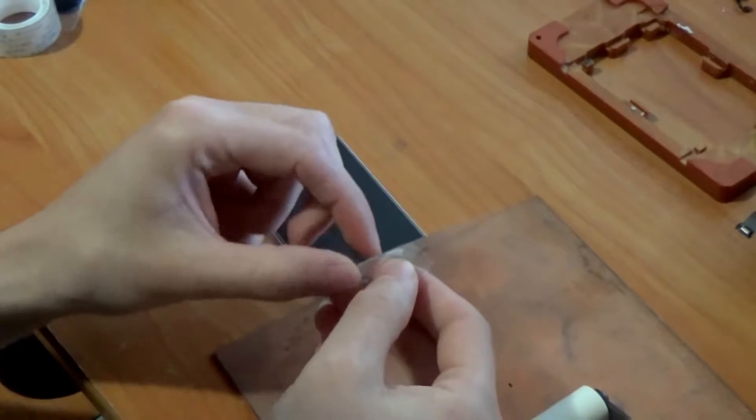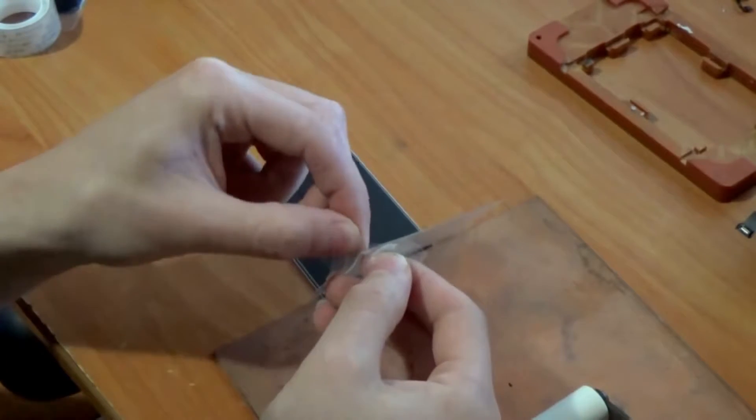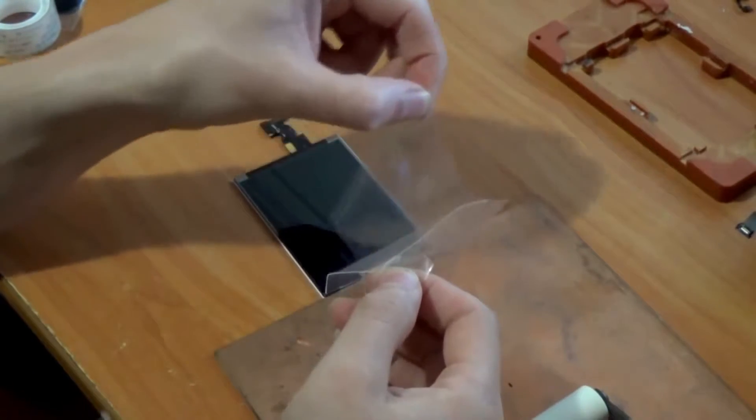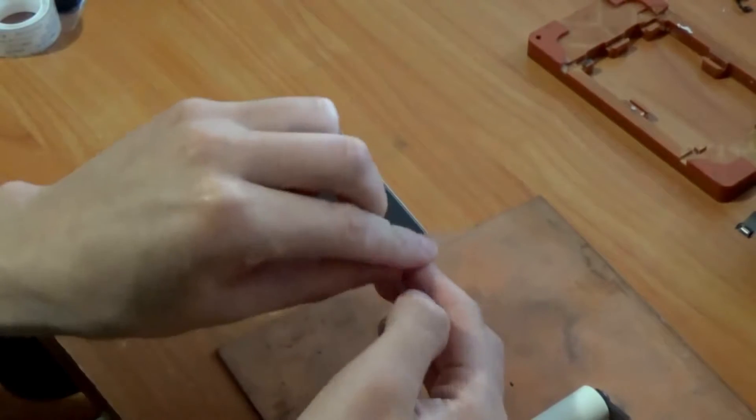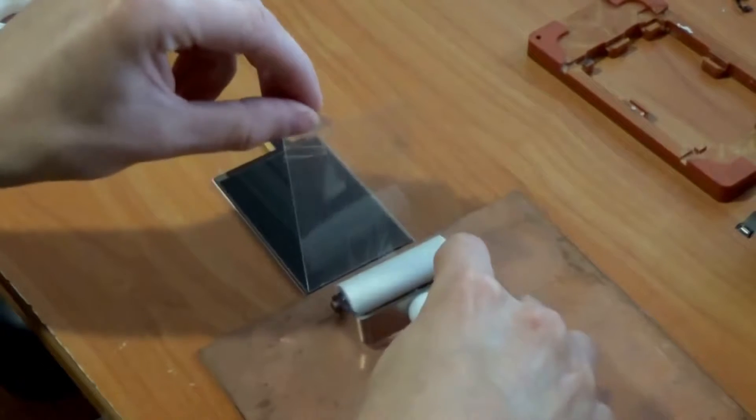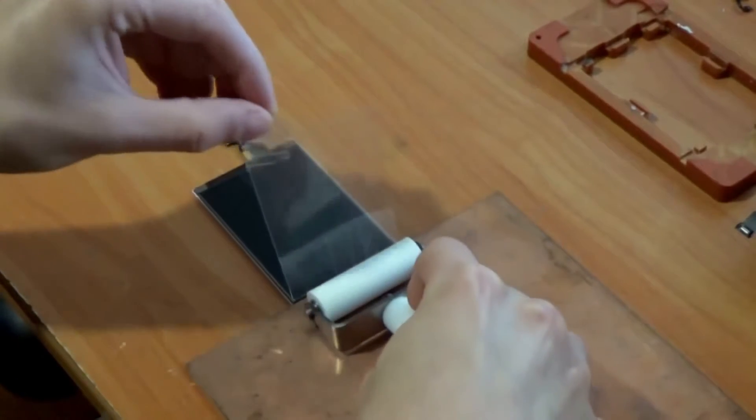Remove protective films, there are two of them on that side. Roll OCA film with roller over the display.